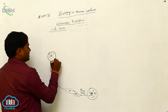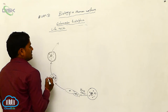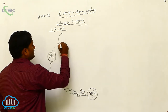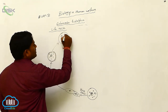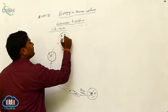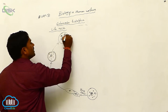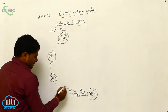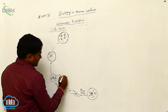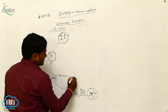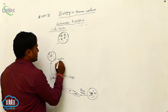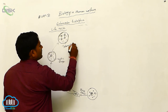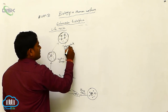This cystic stage will develop into the tetranucleate cyst — meaning four nuclei are formed within the cyst. So this is the pre-cystic stage, this is the cystic stage, and this is the tetranucleate cyst.